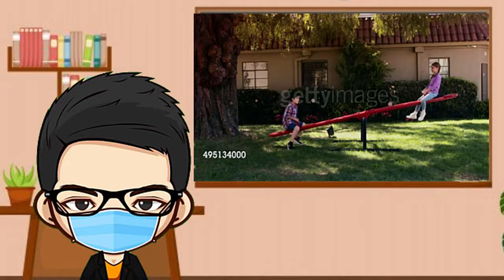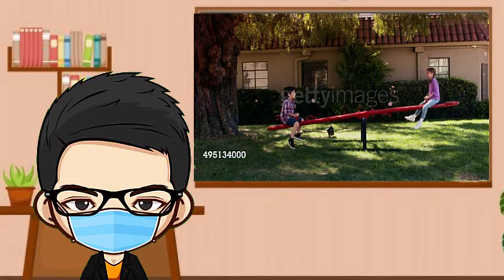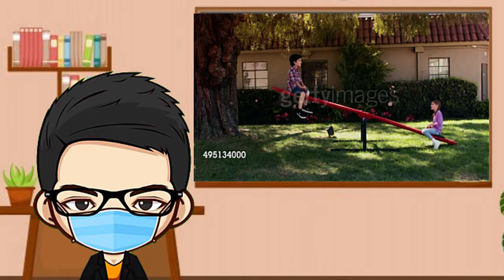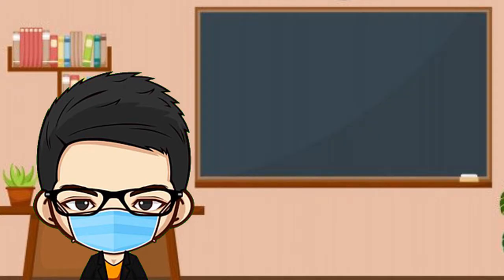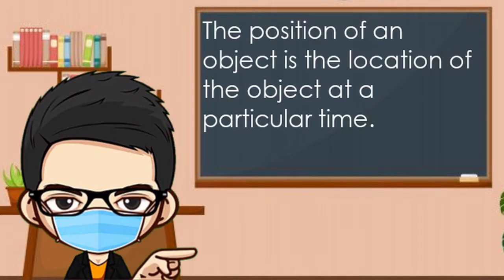When the seesaw goes up and down, it changes its position. When things change their position, they are moving. The position of an object is the location of the object at a particular time.